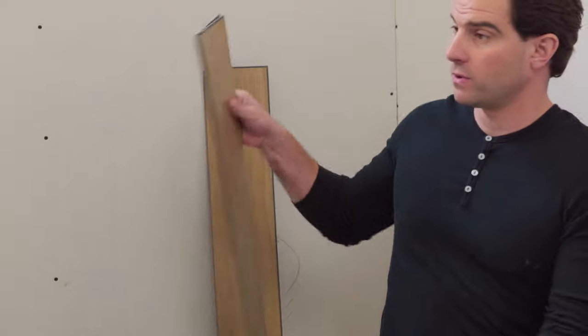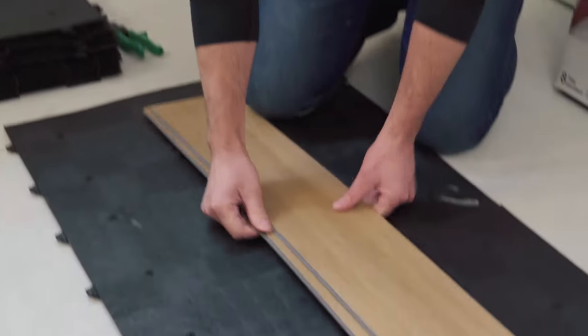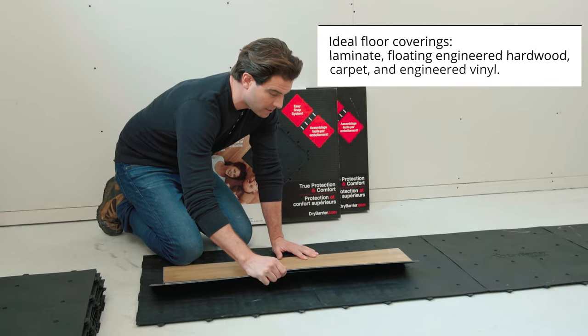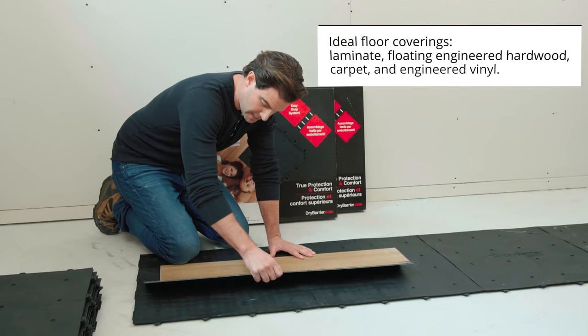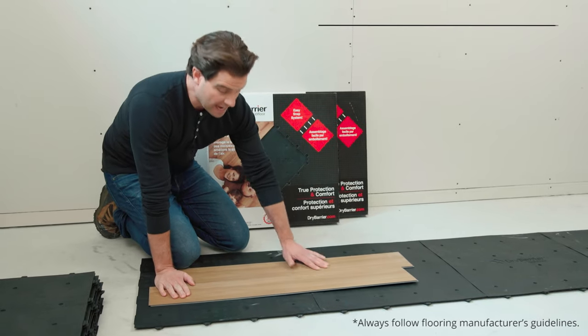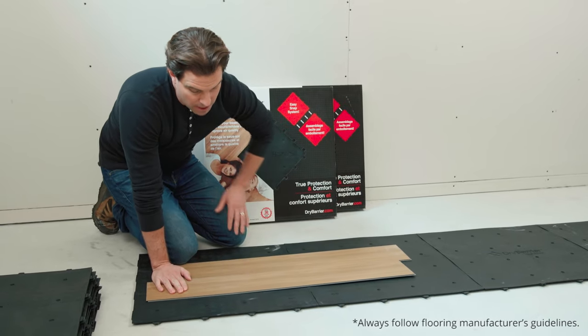A lot of people will lay laminate or vinyl directly on top - there's no other membrane required. You're basically going to get into your next floor application like this. It's as easy as that. You get your new floors laid right on top.